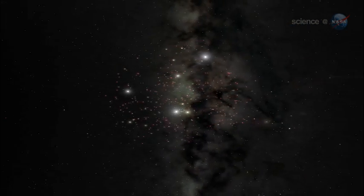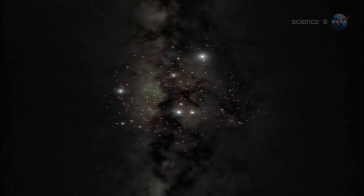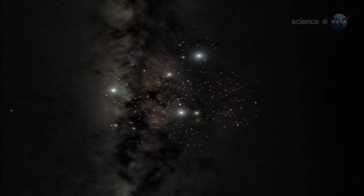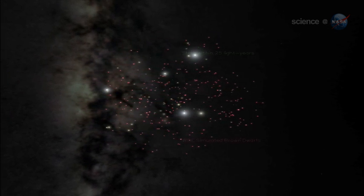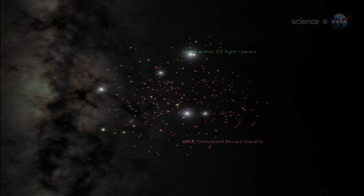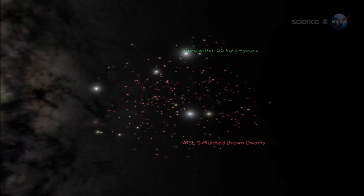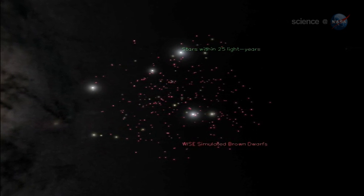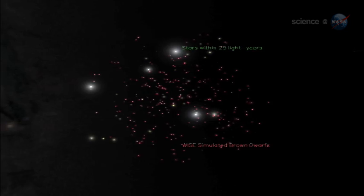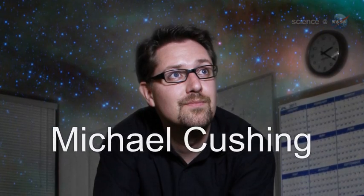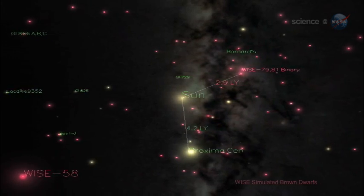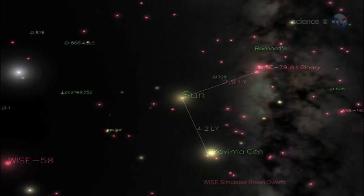Future space travelers might consider visiting Y-dwarfs for a closer look. At a distance of less than 40 light-years, these stars are relatively nearby. Finding these objects so close to our sun is like discovering there's a hidden house on your block that you didn't know about, says Michael Cushing, a WISE team member at the Jet Propulsion Laboratory. It's thrilling to me to know that we've got neighbors out there, and maybe more yet to be discovered.